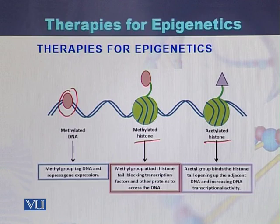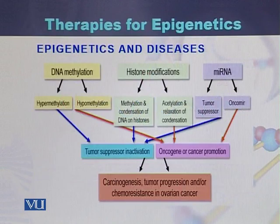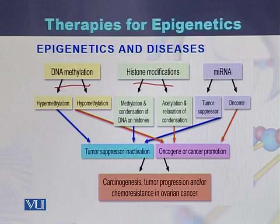When histones are acetylated, there will be more expression of the gene. The common methods responsible for epigenetics are DNA methylation, histone modifications, and miRNAs.